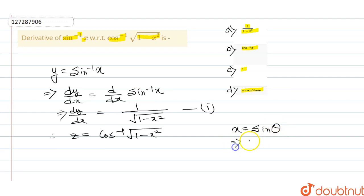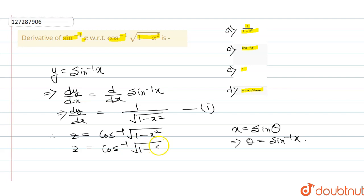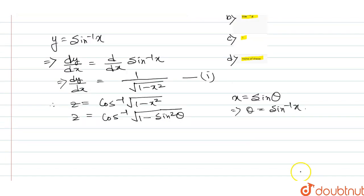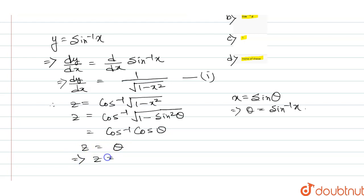Let x be equal to sin theta. Now, z equals cos inverse of under root of 1 minus x squared, which is cos inverse of under root of 1 minus sin squared theta, which equals cos inverse of under root of cos squared theta, which equals cos inverse of cos theta, which equals theta. So z equals theta means z equals sin inverse of x.